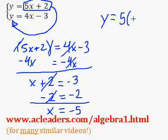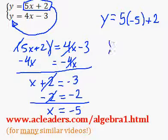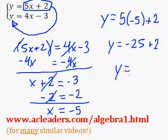So y equals 5 times negative 5 plus 2. y equals 5 times negative 5, negative 25 plus 2. Negative 25 plus 2, negative 23.